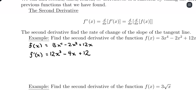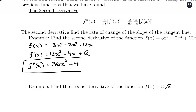Now I'm going to take the second derivative, so it's f double prime of x. We're going to apply those same rules. 12 times 3 is 36, so we'll have 36x to the 2nd. The derivative of negative 4x is just negative 4, and the derivative of 12 is 0. So our second derivative is 36x squared minus 4.